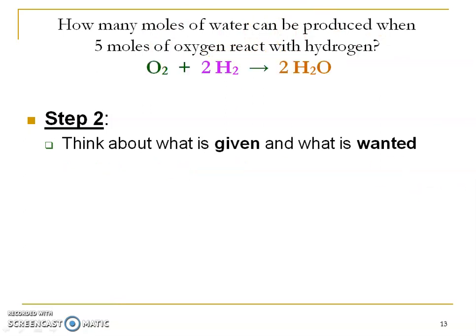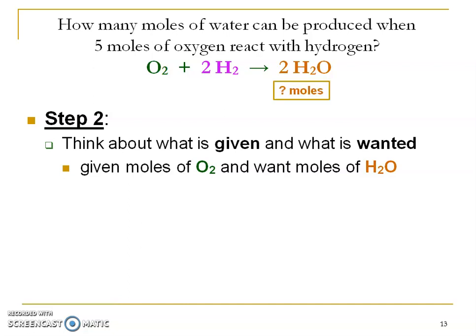Now step two is think about what is given and what is wanted. Well the problem tells us that we are given oxygen and we want water. Okay now remember how in mole problems I would do a question mark with what we want and I would do a star from where my starting point was. Well I'm going to do something similar except I'm going to put the stuff underneath my reaction. So my question mark and units goes under my substance in my reaction. What I'm starting with, the number and units, goes underneath my substance that I'm starting with, the given information. This is going to be really important and really helpful when we do stoichiometry problems.